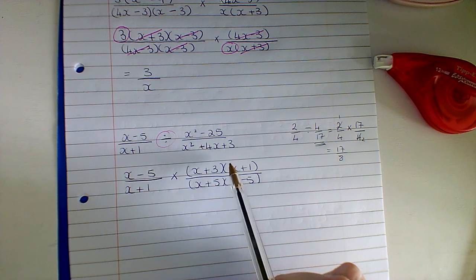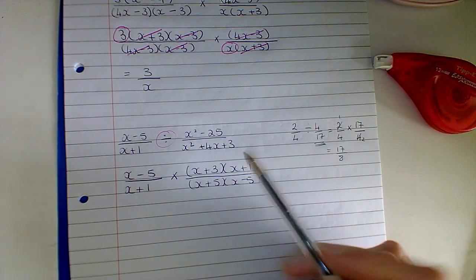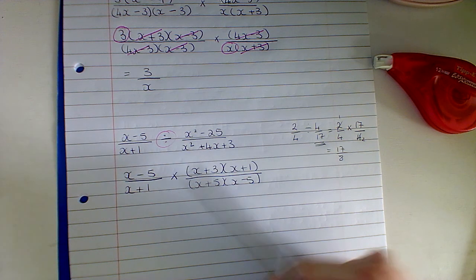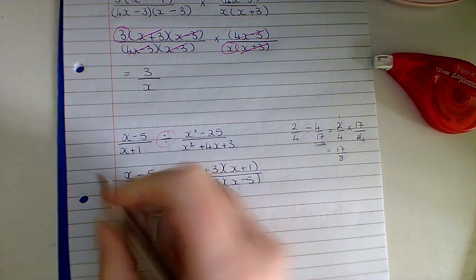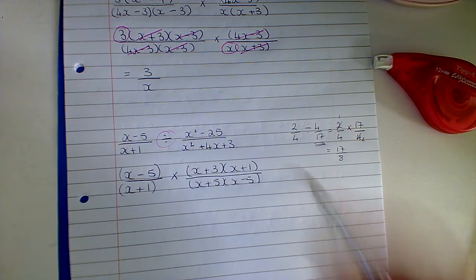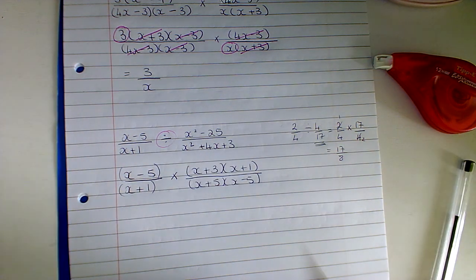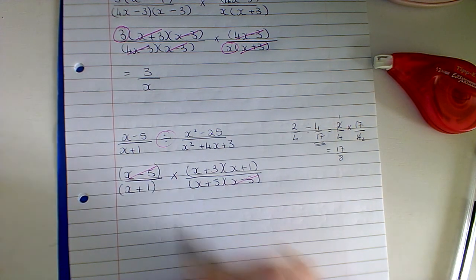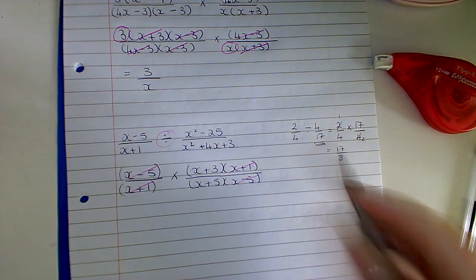Don't worry about doing them all in one go, it's not about speed here, I'm just doing it for handiness sake, but if you need to go and work them out separately, go and work them out, that's fine. So now I have everything factorized, I have my sign changed, I have this flipped, and now I'm going to see what I can cancel. (x - 5), (x - 5), (x + 1), (x + 1).